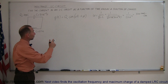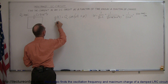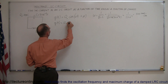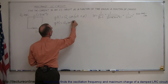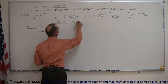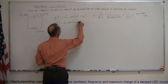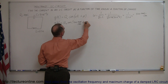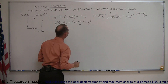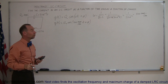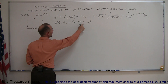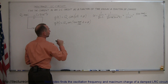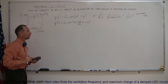So if we plug that into our equation, we have Q as a function of time equal to the initial charge times the cosine of 500 radians per second times time, plus the phase angle. Then we just plug in whatever we want for time, and we'll figure out what the charge is on the capacitor as a function of time.